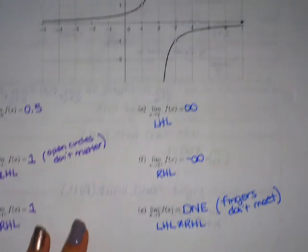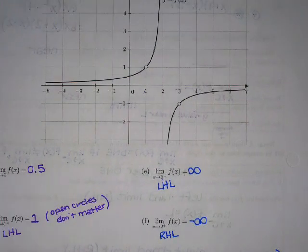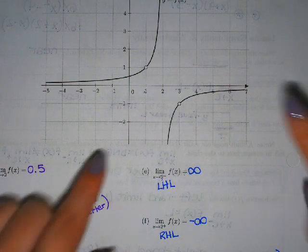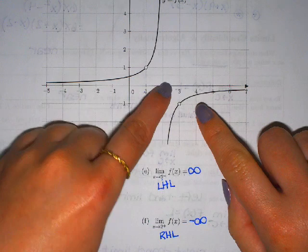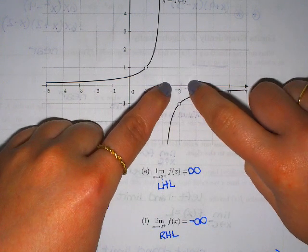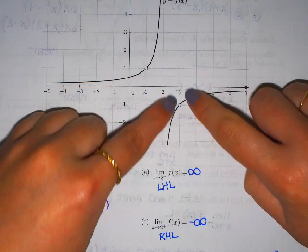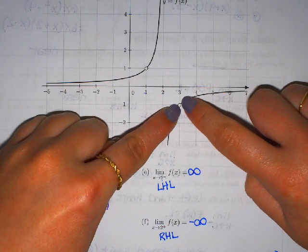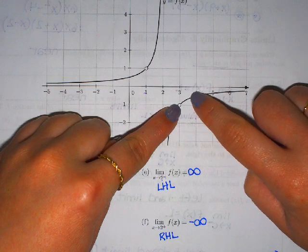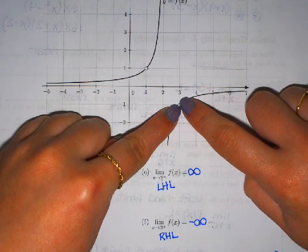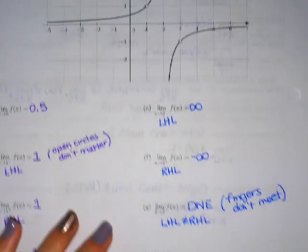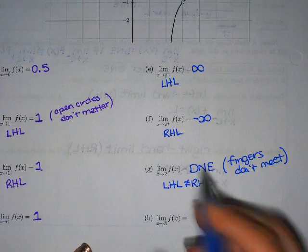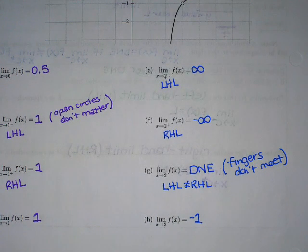Our last one on this page: take the limit as x goes to 3. There's not a plus or minus after it, so it's a two-sided limit. Let's hop on the graph on both sides of 3. I'll approach from about 2.5 on the left and 3.5 on the right — both just barely to the left and right, the graph is down here. If I go in from the left side, my y-value is negative 1. And from the right side, my y-value is negative 1. My fingers do meet. It doesn't matter that it's an open circle — that is my answer. Both sides go to negative 1, so the limit is negative 1.